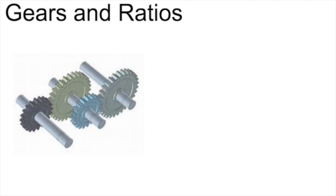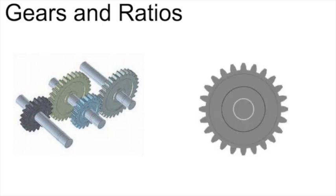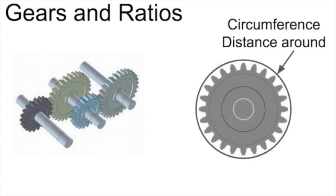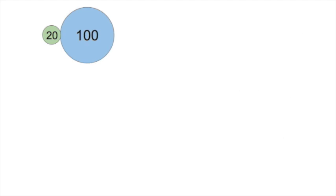Gears come in all different sizes and configurations depending on what we need them to do. What we're really interested in with gears is the distance around the circumference, but in gears we don't measure that in inches or centimeters — we simply measure it by the number of teeth the gear has. The more teeth it has, the bigger around it is. So let's say you have a 20-tooth gear turning a 100-tooth gear. The 20-tooth gear is going to have to turn five times to turn the 100-tooth gear one time, and we call that a 5-to-1 ratio.